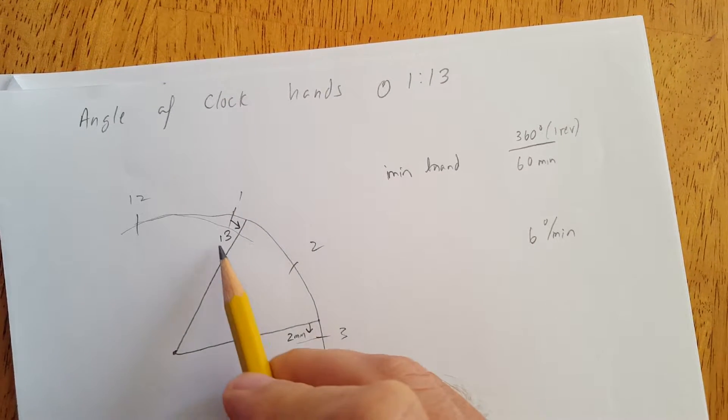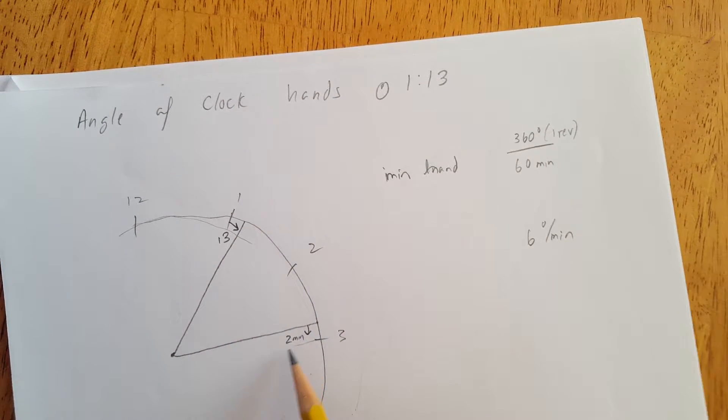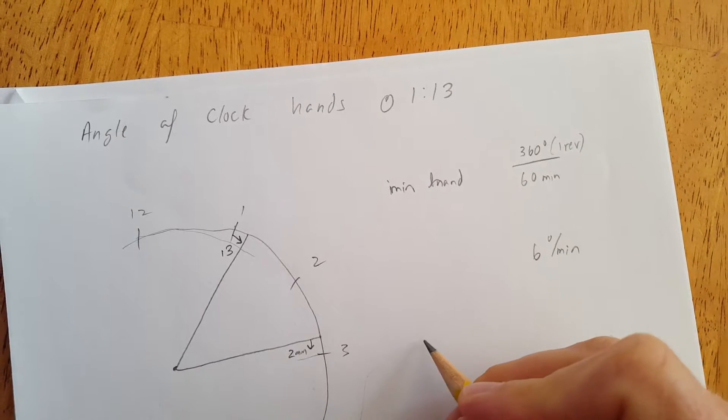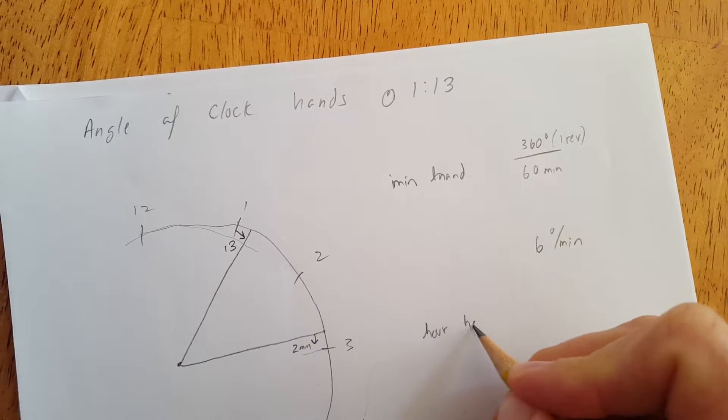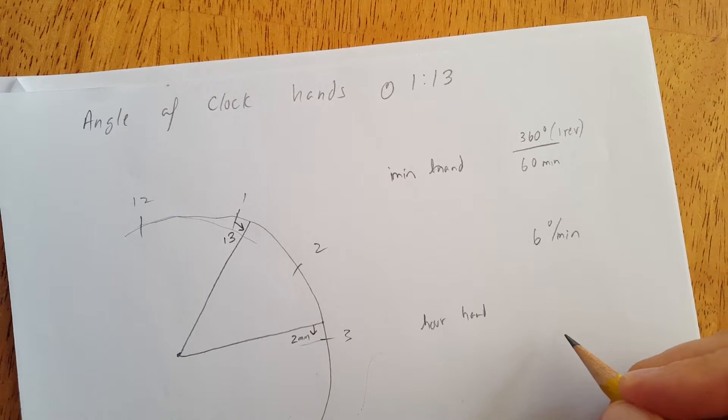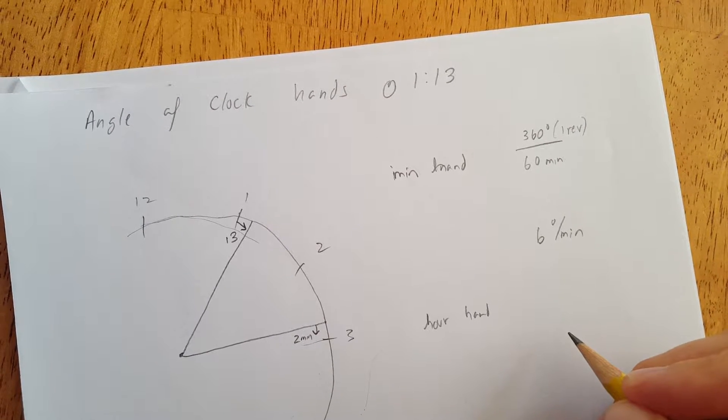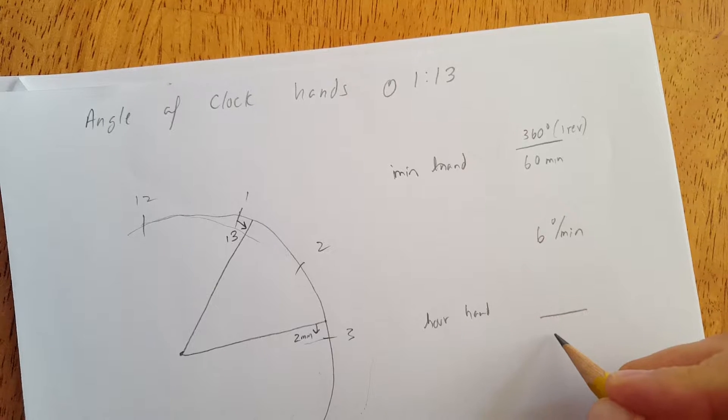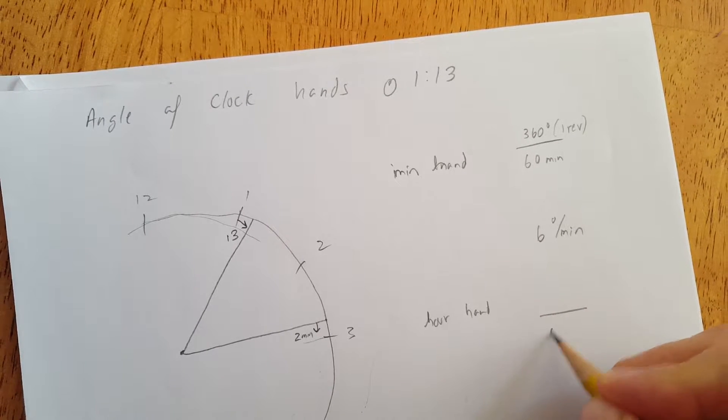So 6 degrees per minute the minute hand goes. Okay, and then so that's getting us close here. Now we're going to do the hour hand similarly. Hour hand, we want degrees per minute, right? So it's still 60 minutes. We're going to look at the 60 minutes.